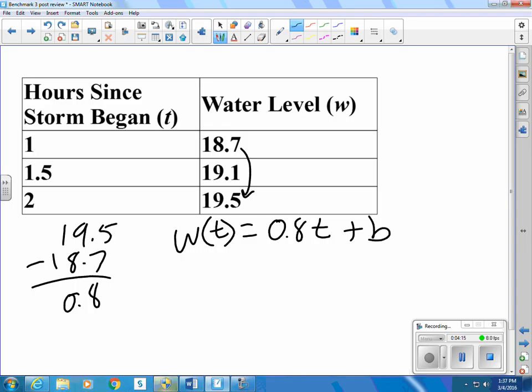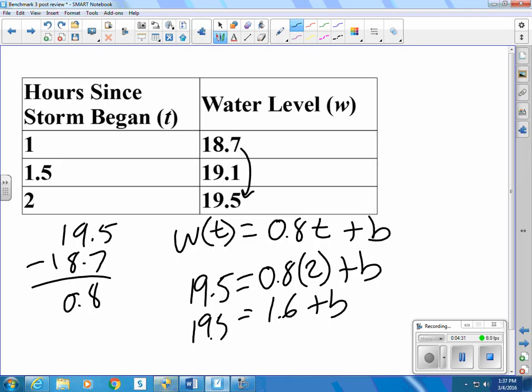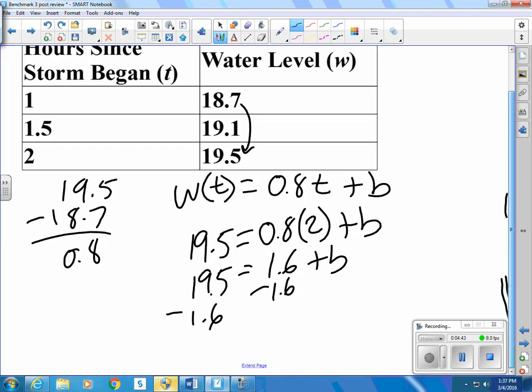Let's plug in one of those points. Let's plug in 19.5 equals 0.8 times 2 plus b. So that's 1.6 plus b. So let's subtract the 1.6, and that gives us, so 19 take away 2 would be 17. Bring back the 0.5 and 0.4 more would be 17.9.